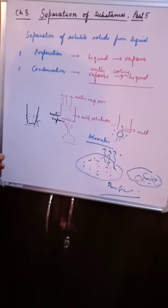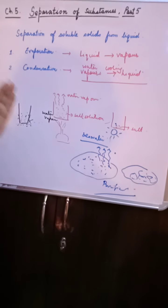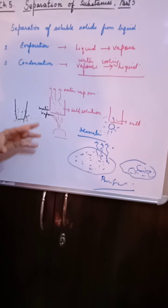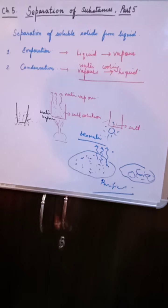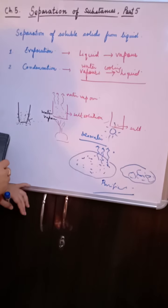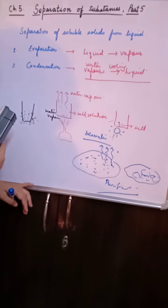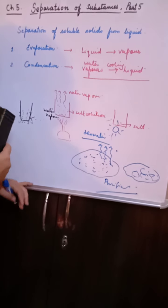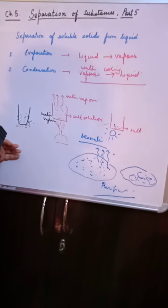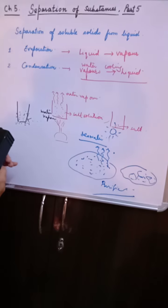Now we can use even two methods or more than two methods together, one by one, for separating components of a mixture. We have learned how to separate using sedimentation and decantation, filtration, and loading. Now I am going to discuss examples in which we will have a clear idea how two or more methods can be used for separation.